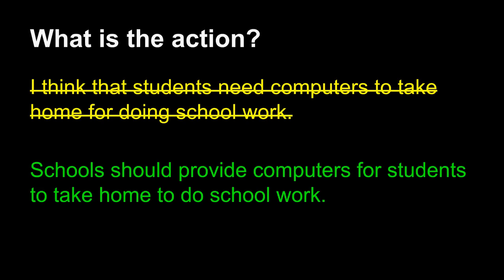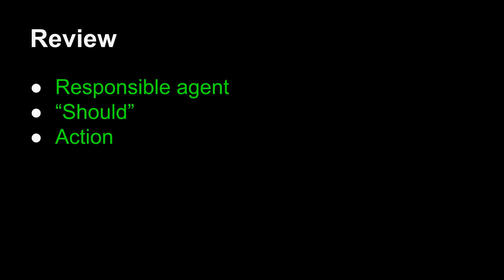Getting rid of the informal version and sticking with the formal claim ensures that we have a formal claim we can use in argument. Let's review. A claim carries three parts. The first is the responsible agent — the person or organization that will do something. The second is the word "should," indicating that this is your opinion. The third is the action — what exactly you wish that the responsible agent would do. If you include all three parts, you've written a clear claim that you can proceed with to the next step.